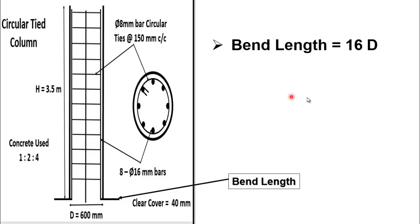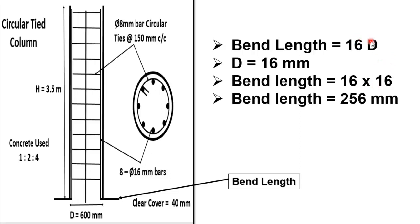So just multiply 16 by 16, because the first 16 is given in the formula and the second 16 is the diameter of the longitudinal bar. After doing this simple calculation, we get that the bend length for this column is 256 millimeters, which equals 25.6 centimeters.